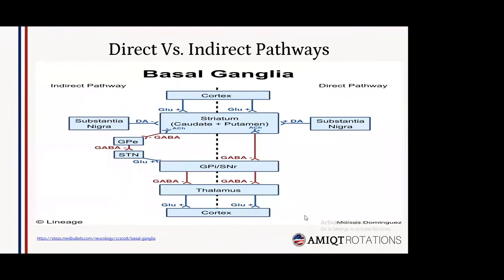To explain this further, let's discuss direct versus indirect pathways of the basal ganglia, where inputs and outputs of the cortex are refined and modulated to produce refined movement. In the direct pathway, input from the cortex goes to the striatum and caudate. The striatum sends GABAergic signals to the globus pallidus internus and substantia nigra, which send inhibitory signals to the thalamus. The thalamus sends stimulatory signals to the cortex. In the direct pathway, activation of the striatum inhibits the globus pallidus internus, which disinhibits the thalamus, thus activating the cortex and increasing movement.